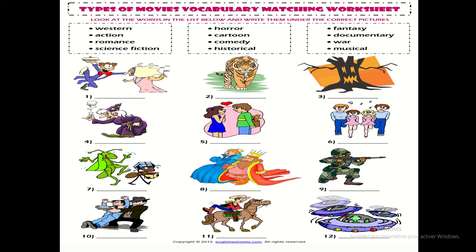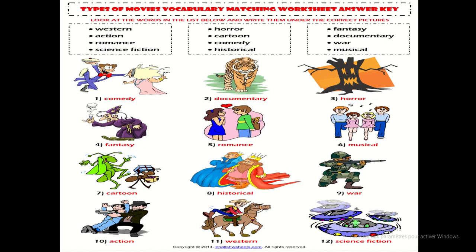Now let's do Exercise 1: Types of Movies — Vocabulary Matching. Look at the words in the list and write them under the correct pictures: western, action, romance, science fiction, horror, cartoon, comedy, historical, fantasy, documentary, war, and musical. We have 12 pictures. Open your notebook or take a piece of paper and do this exercise. You can pause the video and think.